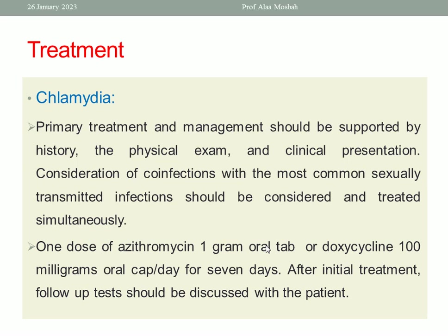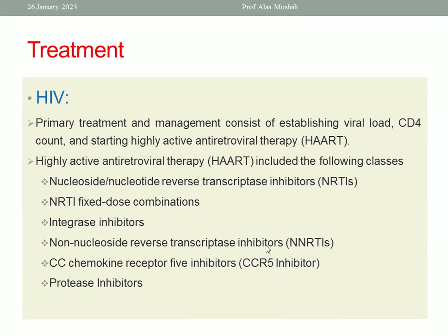What about HIV? The primary treatment consists of establishing viral load, CD4 count, and starting Highly Active Antiretroviral Therapy (HAART). HAART includes the following classes: nucleoside/nucleotide reverse transcriptase inhibitors (NRTIs), fixed-dose combinations, integrase inhibitors, CCR5 chemokine receptor 5 inhibitors, non-nucleoside reverse transcriptase inhibitors (NNRTIs), and protease inhibitors.